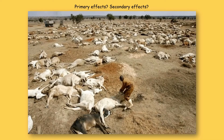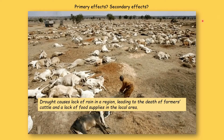Another natural hazard is drought. The primary effect you can see is cattle and animals dying. The secondary effect would be people going hungry, the local economy suffering, and starvation occurring. Here is an example of how you might write about it in the exam — a very well-developed sentence which will give you a high mark: 'The drought causes a lack of rain in the region, which is the primary effect, leading to the death of farmers' cattle and a lack of food supplies in the local area' — and that is the secondary effect.